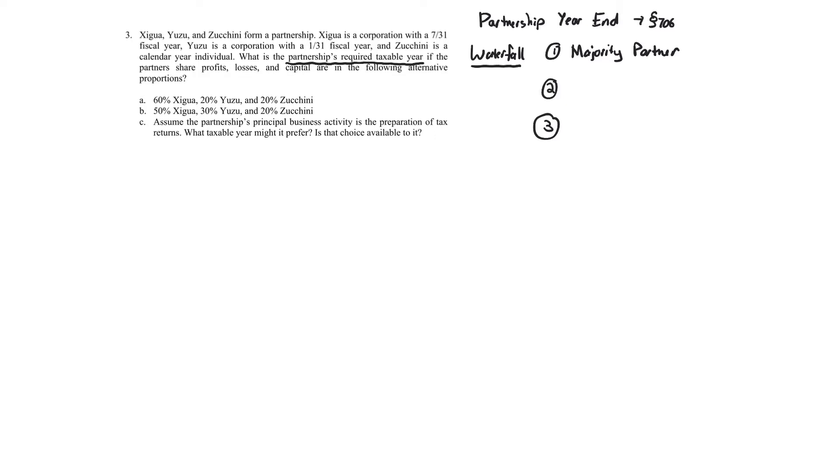If that doesn't work, you go to the second test, called the principal partner test. It says you look at all partners that own 5% or more of capital or profits. In the first test, it's capital and profits; in the second, it's capital or profits. If all partners owning 5% or more have the same year end, you use that year end. This test is quite rare. Finally, the third level is called least aggregate deferral.